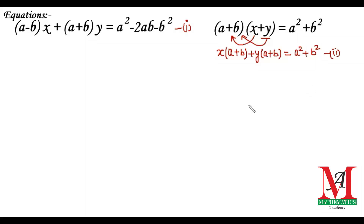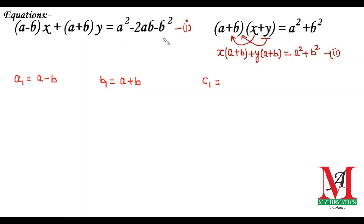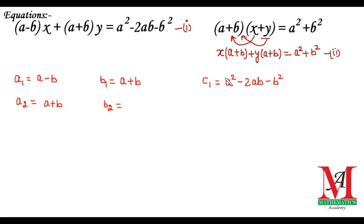Now we need the coefficients: a1 is the coefficient of x in equation one, and the value is (a − b). b1 is the coefficient of y in equation one, and the value is (a + b). c1 is the constant term in equation one, that is a² − 2ab − b². From equation two: a2 is (a + b), b2 is (a + b), and c2 is the constant term a² + b².